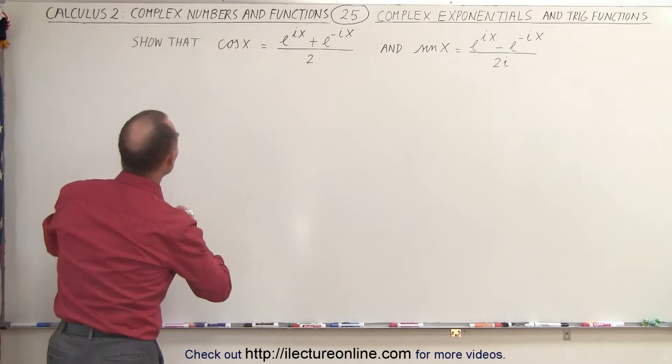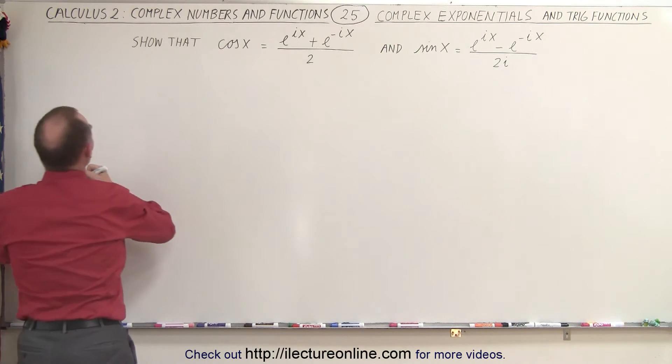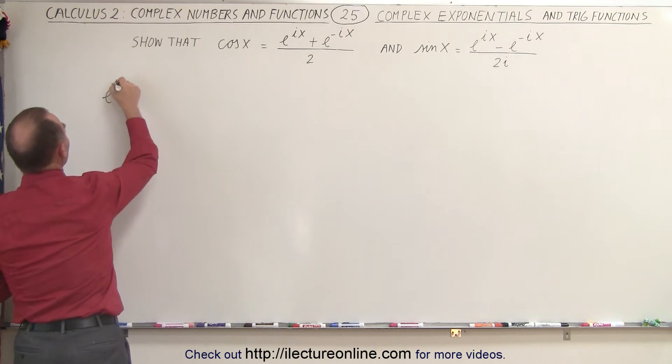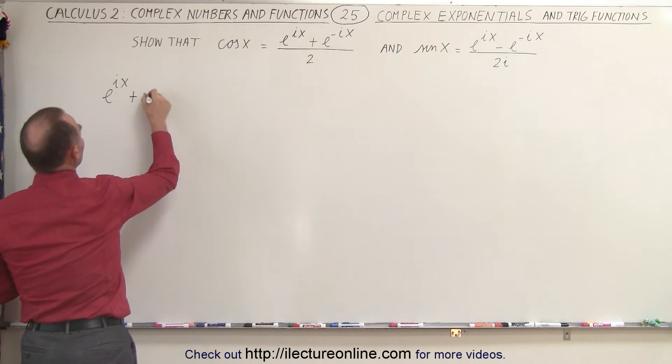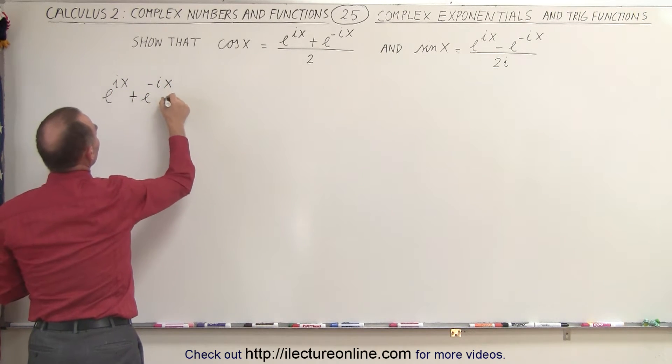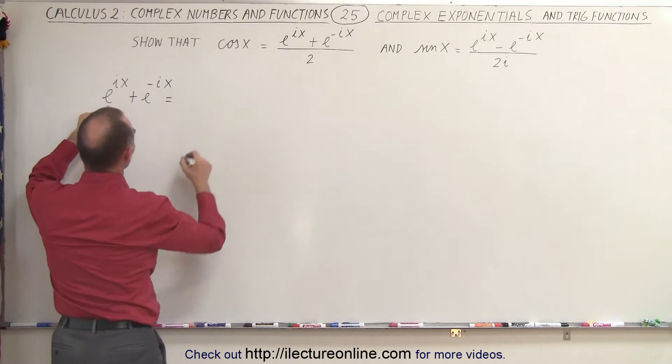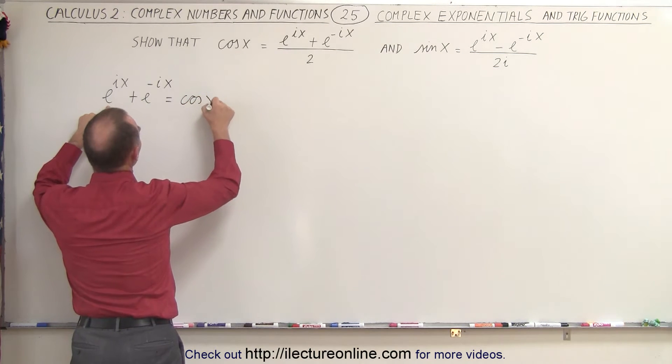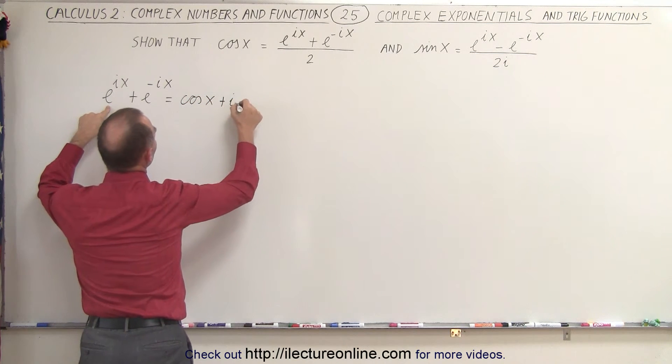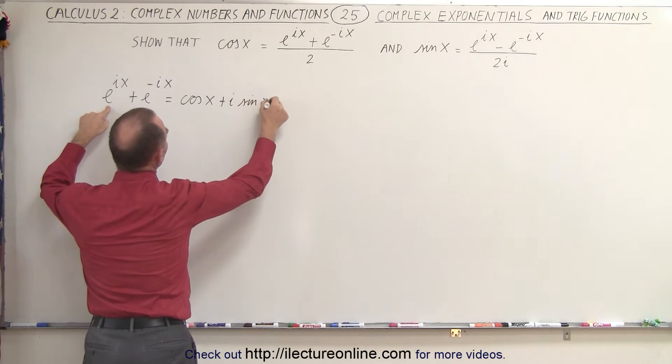First of all, what we can do is expand these two right there. We can say that e to the ix plus e to the negative ix is equal to, well, expand this one, this becomes the cosine of x plus i times the sine of x.